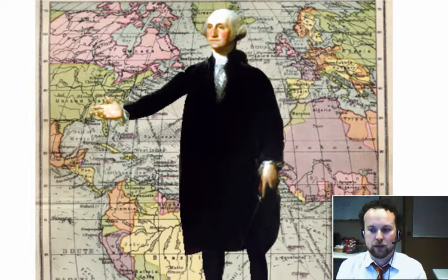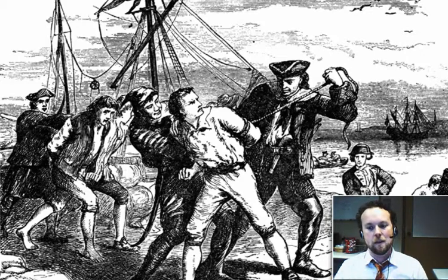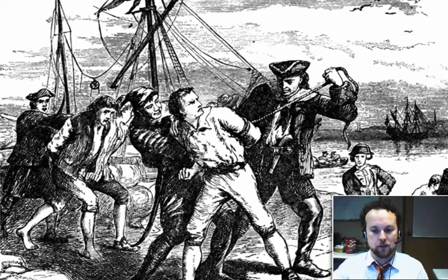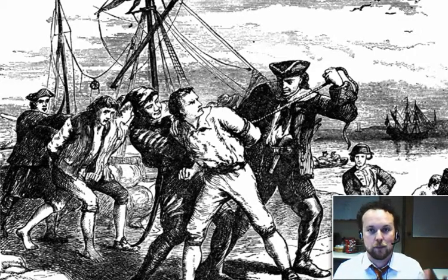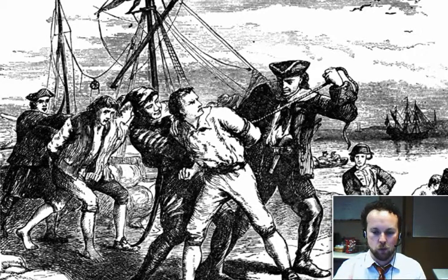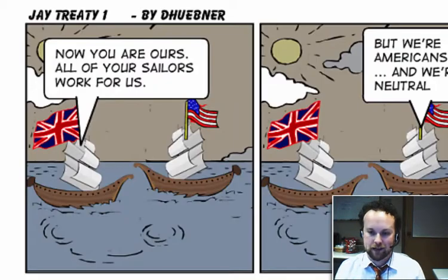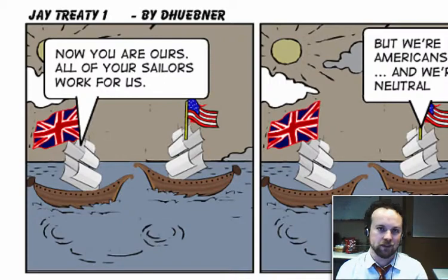In 1793 — the same year as the neutrality proclamation and the Reign of Terror in France — Britain captured over 250 American trading ships in the West Indies, first to stop U.S. supplies from going to France, and likewise the French started capturing American ships to stop supplies going to the British. Some Americans called for war again against Great Britain. But Washington knew the country was still way too weak to enter into another war, so he sent Chief Justice John Jay to Britain to try and talk for peace.